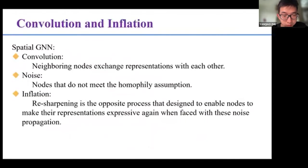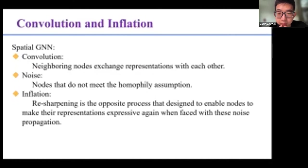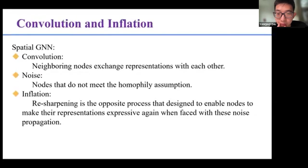Here we discuss why inflation works. For spatial graph neural networks, node representations are learned by a convolution where neighboring nodes exchange representations with each other. Then, the noise refers to the information from nodes that do not meet the homophily assumption. As the number of convolutions increases, all nodes receive relevant noise information and the representations tend to be smooth. While, when faced with noise, inflation can ignore the interference of a small proportion of noise and resharpen the representations of the intermediate layer.